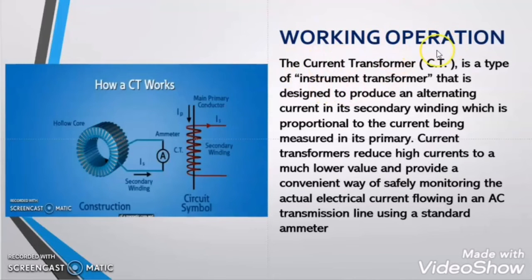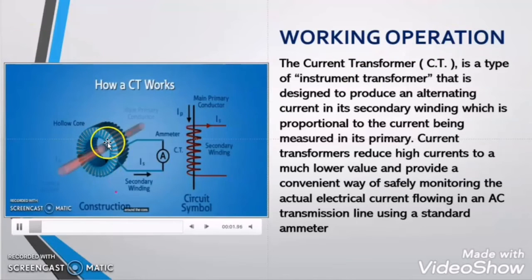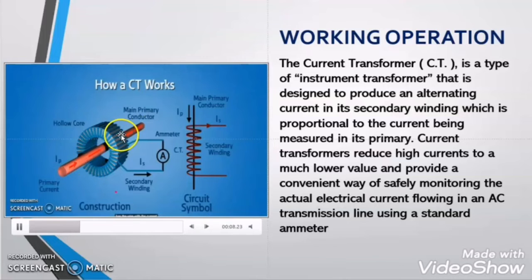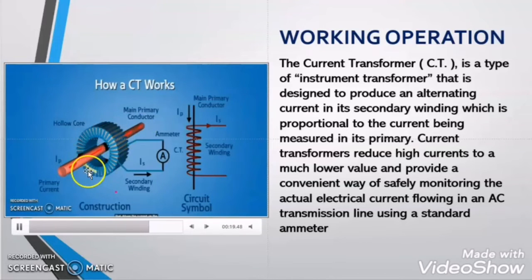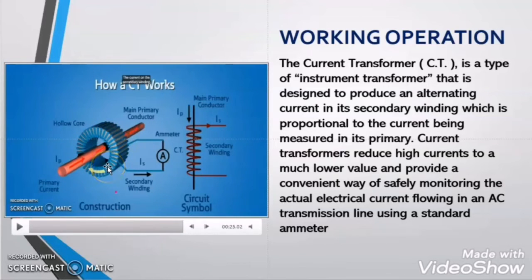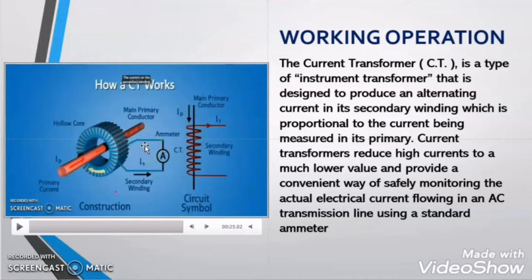Now let us study the working operation of the current transformer. The working principle is same as the power transformer. If we place the current transformer such that the conductor whose current we need to measure is passing through the window of the CT, then due to the current flowing in the conductor an EMF is induced in the secondary winding. Due to this induced EMF, if the winding is shorted or connected with some load, current will flow in the secondary winding — this is Faraday's law of electromagnetic induction.